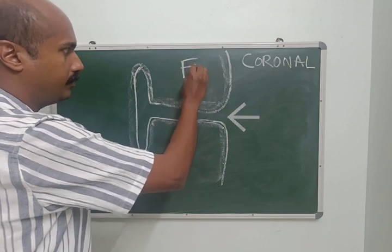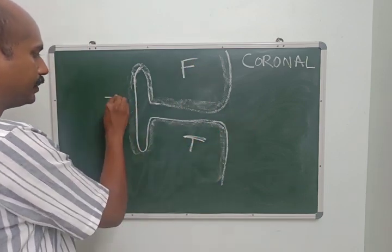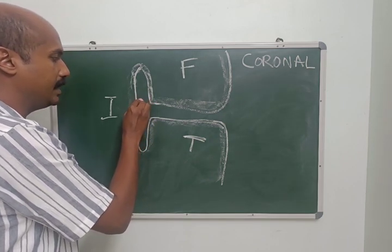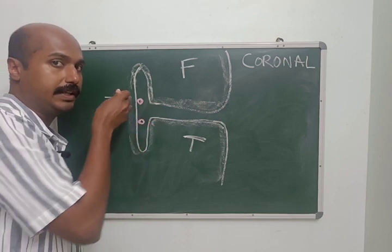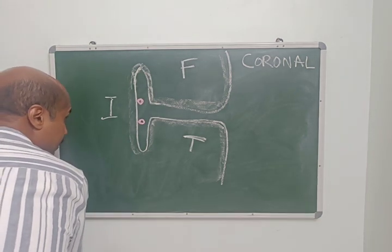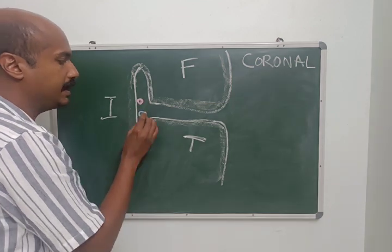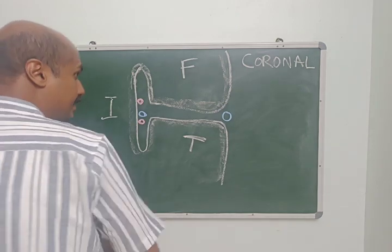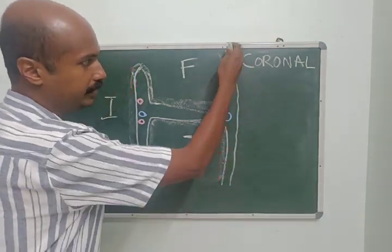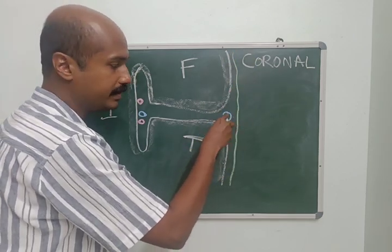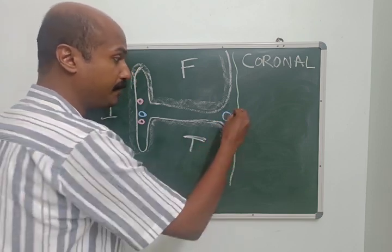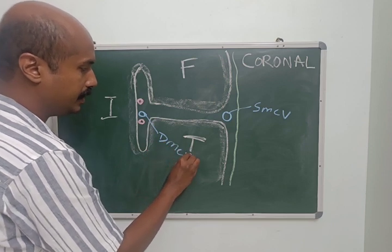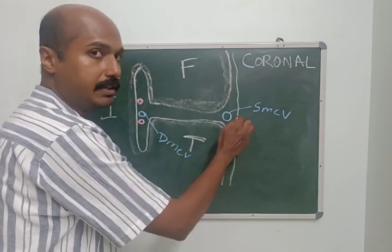Imagine a coronal section through the brain: this is the sylvian fissure, the upper part is frontal, the lower is the temporal region, and the innermost is the insular cortex. The middle cerebral artery — with its superior and inferior divisions — traverses on the surface of the insula. Along with it you have the deep middle cerebral vein accompanying the MCA branches, while the superficial middle cerebral vein runs on the superficial aspect of the sylvian system.